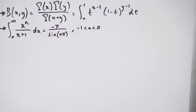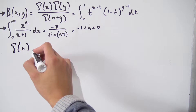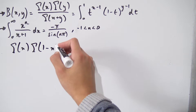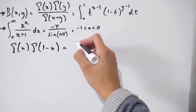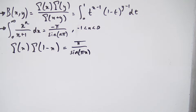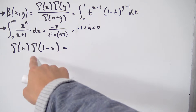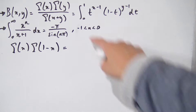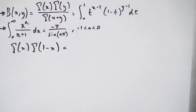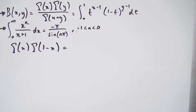So Euler's Reflection Formula — what exactly does it say? It says that if you take the gamma function of x and multiply it by the gamma function of 1 minus x, you get pi over the sine of pi times x. We want to prove this, and notice we have the product of two gamma functions, which also appears in the formulation for the beta function. So it would be nice to rewrite this product as a beta function.